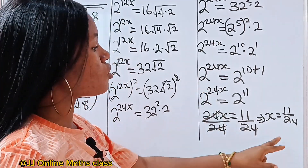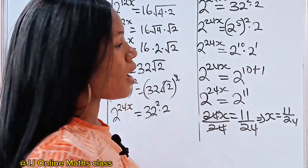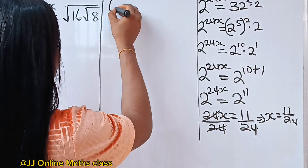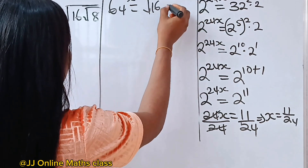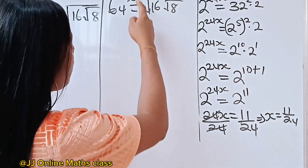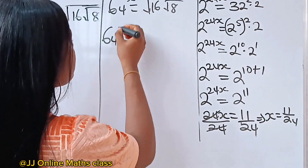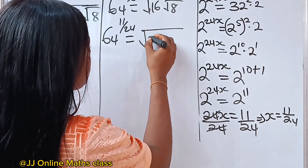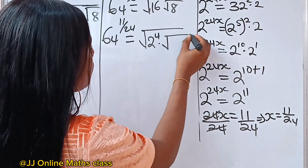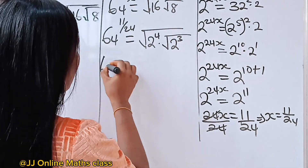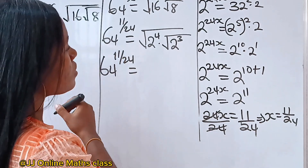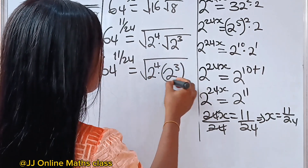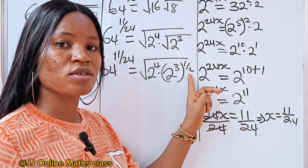It's time to check if the solution is right. We have 64 to the power of x is equal to square root of 16 root 8, and we got x as 11 over 24. So we have 64 raised to the power of 11 over 24 is equal to square root of 16 — which is 2 to the power of 4 — times root 8, which is 2 to the power of 3. The square root sign is the same as raising to the power of half.